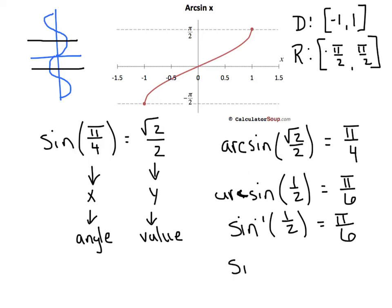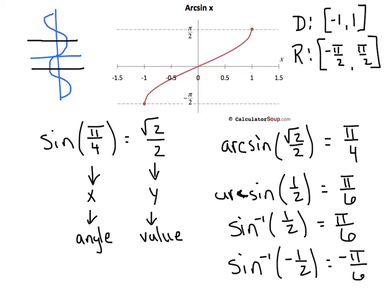Watch out for the negative values. If it's negative 1/2, look at what your graph is telling you. At negative 1/2, the corresponding value on the curve is a negative angle, and this angle is negative π/6. Sometimes people are tempted to give an answer of 7π/6 or 11π/6, but those angles simply do not exist in this restricted range.